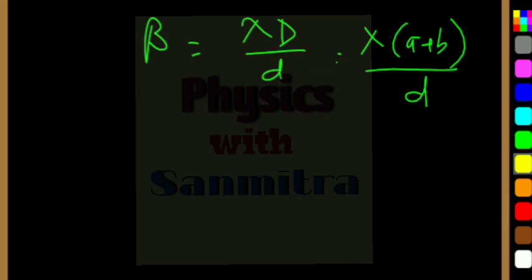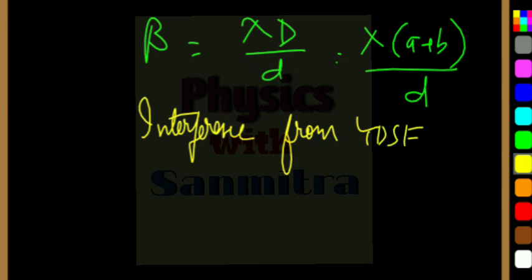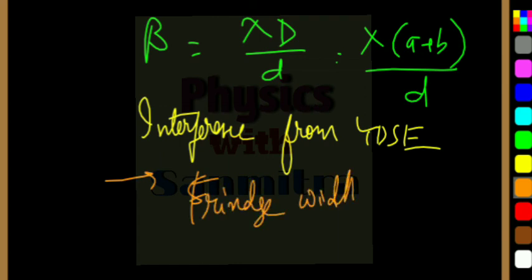In case of interference from Young's double slit experiment, what we have observed is that the fringe width is the same or constant - that is lambda D by d. This is what I missed in the last lecture and it was important.